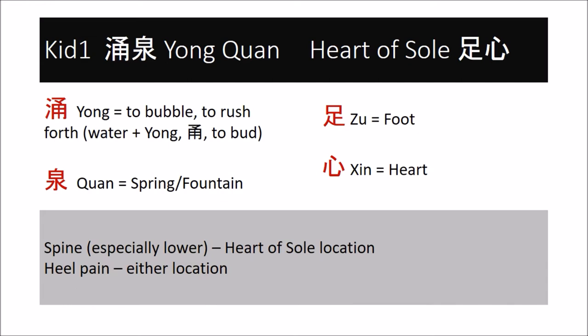The kidney channel has an intimate connection with the spine, especially with the lower back, as well as with the heel. Heart of soul and kidney one both treat the spine and the heel. For the spine, I prefer the location of heart of soul.